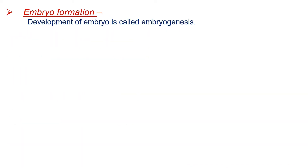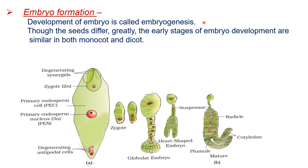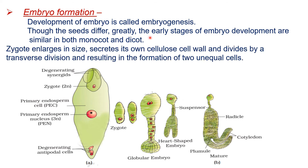Now next is embryo formation. The development of an embryo is called embryogenesis. Before embryo development, the zygote undergoes a resting period. The early stages of embryo development are similar in both monocots and dicots.